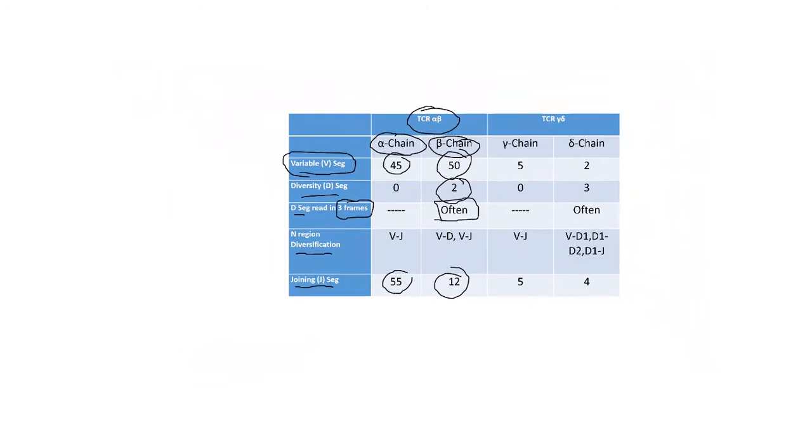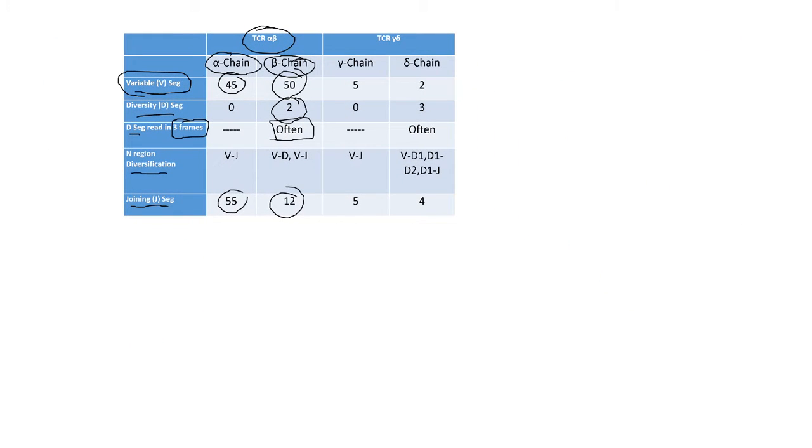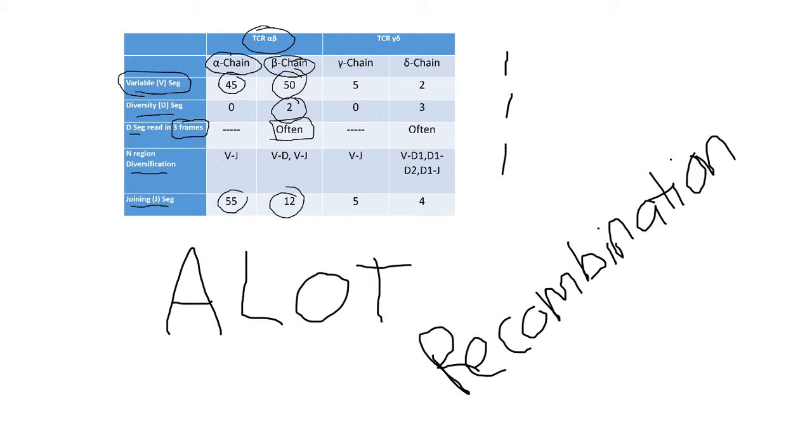Now remember, I said that each of these regions gets randomly selected. So if I have 45 variable regions, I'm going to randomly select one of those. I'm going to randomly select one of my diversity regions. I'm going to randomly select one of my joining regions. And so I can recombine these. And how many possible combinations can I get? The answer is a lot, but it's not enough. In order to have enough T cell receptor diversity to identify any possible pathogen that could enter your body, these receptors have to undergo recombination. That's meaning the DNA bases get deleted and added randomly on these various segments.